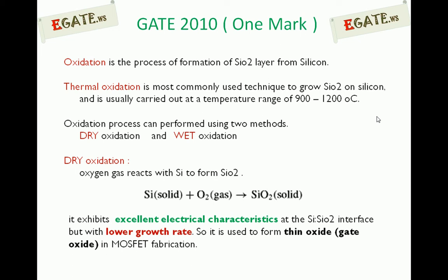Oxidation is the process of formation of a silicon dioxide layer from silicon. Thermal oxidation is the most commonly used technique to grow silicon dioxide on silicon. Since this process is carried out at higher temperatures, it is called thermal oxidation. The usual temperature ranges from 900 to 1200 degrees centigrade. The oxidation process can be performed by two methods: dry oxidation and wet oxidation.